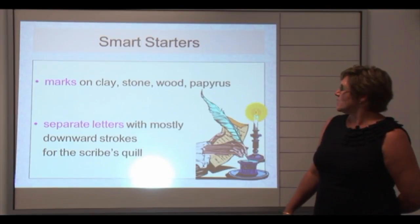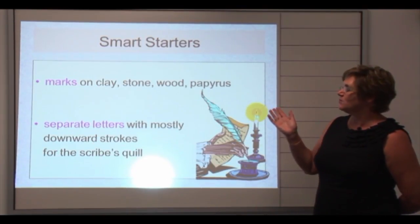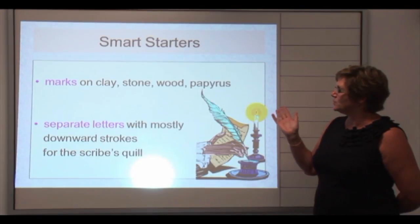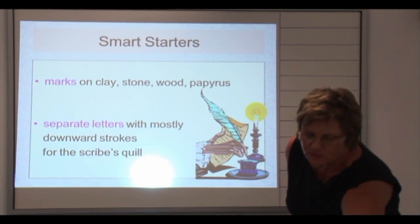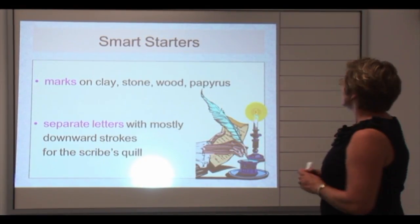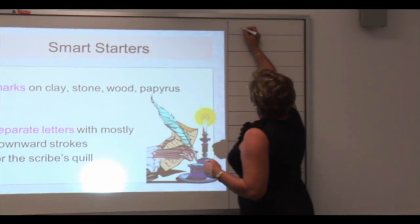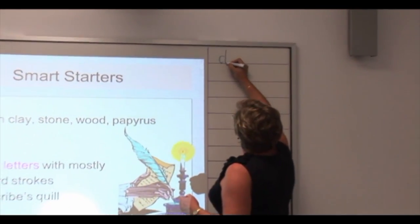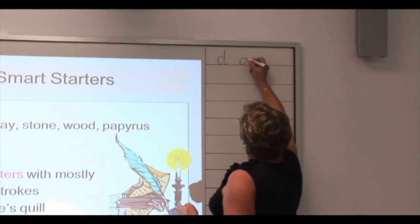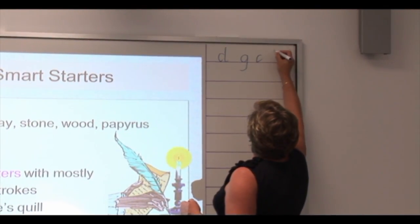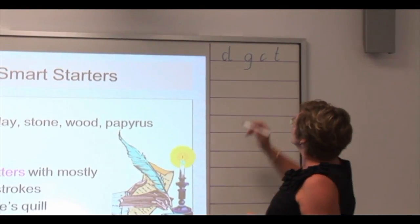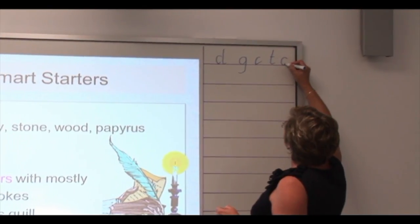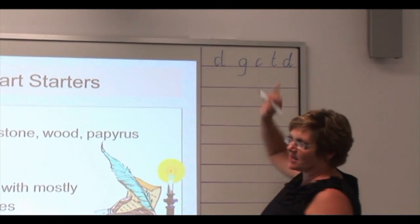Now where did writing come from? Well originally it was just marks on clay or stone or wood and then it was mostly separate letters and the emphasis was on the downward stroke because of the quill pen. So if you looked at doing a D for instance it was the down strokes or on a G, the down strokes took the emphasis because that's how the quill had to work. You didn't have a D going around and back up and down as later happened.